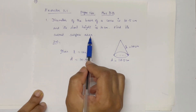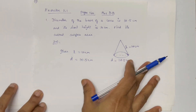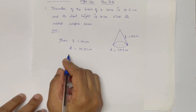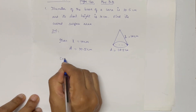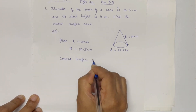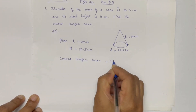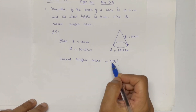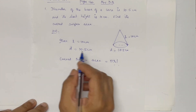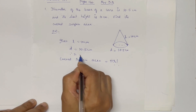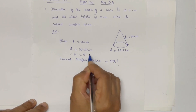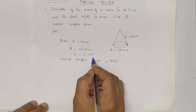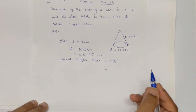The formula for curved surface area is π r l. First, find the radius: r = diameter divided by 2 = 10.5 ÷ 2 = 5.25 cm. Now substitute the values.